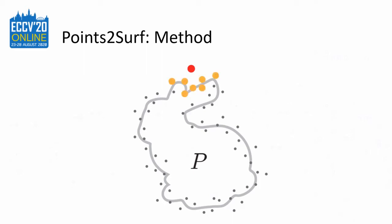We use two subsamples. The local prior can be learned from a local subsample and generalizes across shapes, shown in orange. This subsample consists of 300 nearest neighbors of the query point. A global subsample, shown in purple, is required for the inside-outside decision and only needs to be coarse. This subsample is over the entire point cloud with a distance-dependent probability.